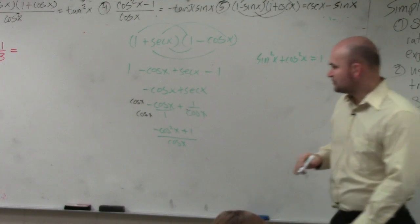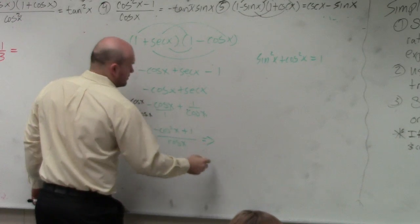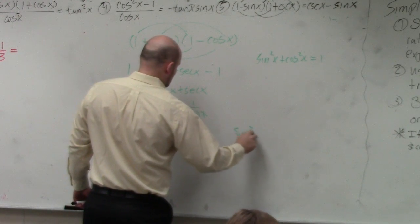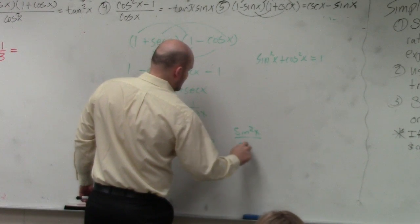well, 1 minus cosine squared of x is equal to, let's do this, sine squared of x over cosine of x.